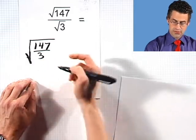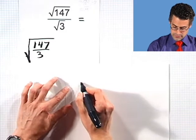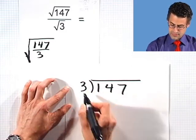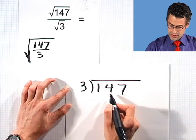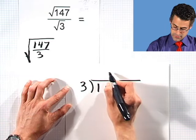to just rewrite this as square root of 147 all divided by 3, one huge square root that covers the entire fraction. Then we could actually divide out and see what we get.